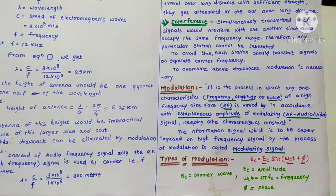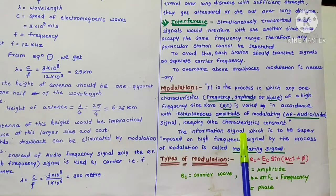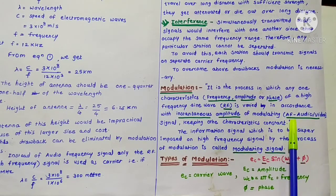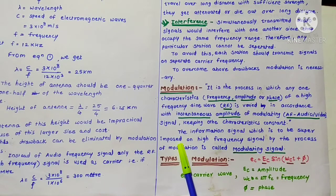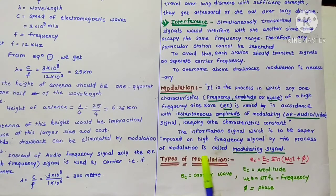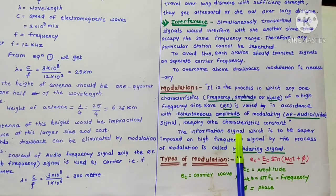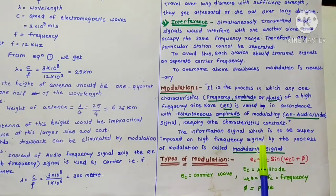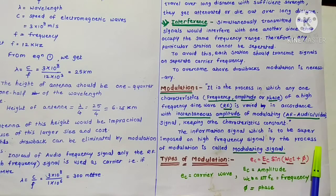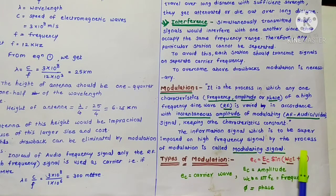The information signal — that is, the audio frequency or lower-frequency signal — is superimposed on the high-frequency (radio frequency) carrier signal by the process of modulation. This superimposed signal is called the modulating signal.